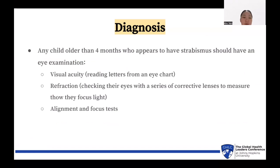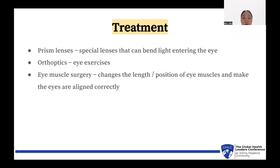For diagnosis, any child older than 4 months who appears to have Strabismus should have an eye examination including refraction, alignment, and focus tests. Strabismus can be treated with prism lenses — special lenses that bend light entering the eye — orthoptics, eye muscle surgery, and more.